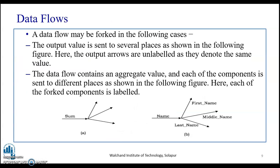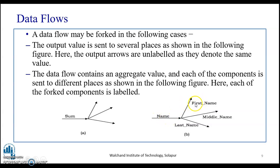The data flow may be forked in some cases — the output value is sent to several places as shown in the following figure. Consider a sum: it can be forked to different processes. The data flow contains an aggregate value and each of the components is sent to different places. Each fork component is labeled — for example, a name can be split into first name, middle name, and last name.